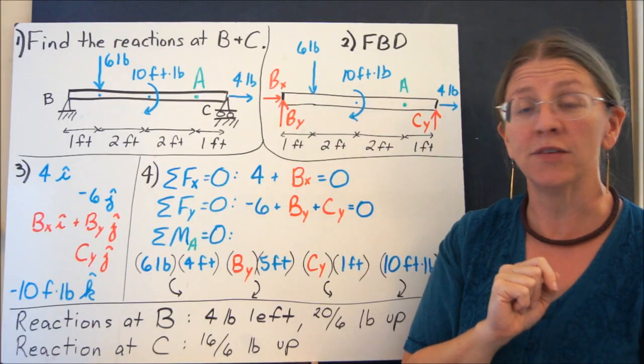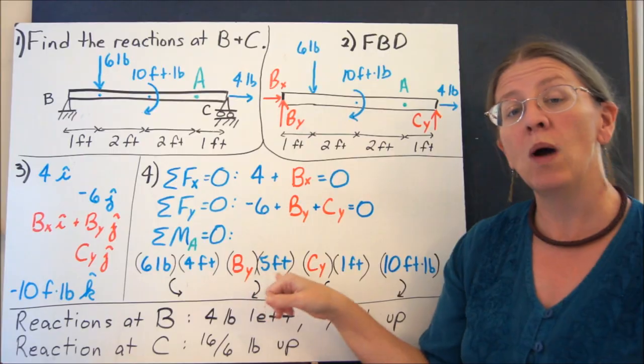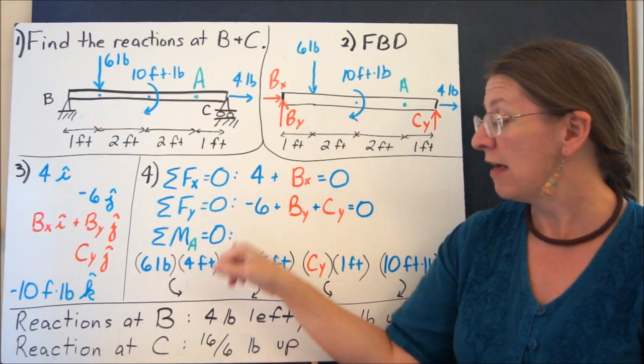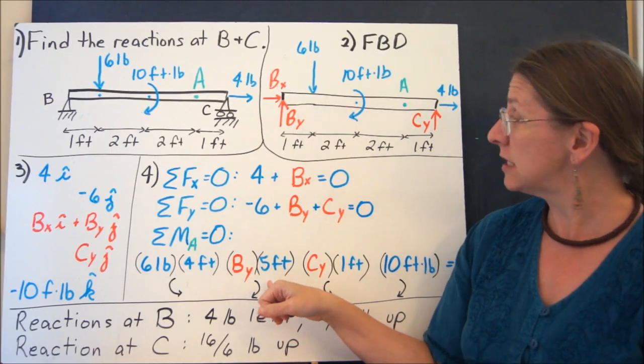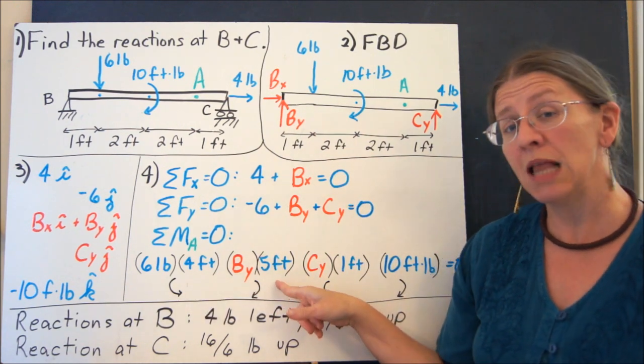BY does create a moment at A. A does not lie along its line of action. The distance there is now five feet. So I have BY acting at five feet. That moment, BY times five, tends to spin this, this one's counterclockwise, this one's clockwise.